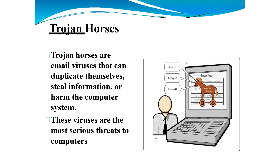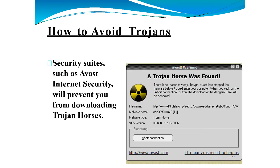A Trojan horse is a dangerous virus that especially comes through email. These are called email viruses that can duplicate themselves and steal information or harm the system. They are the most serious threats to companies. To avoid Trojans, use security suites such as Avast Internet Security, which will prevent you from downloading Trojan viruses.